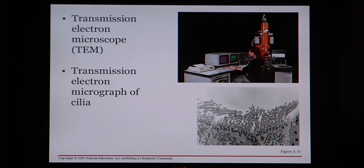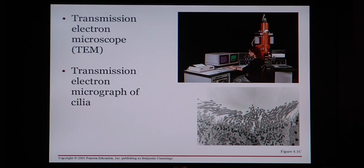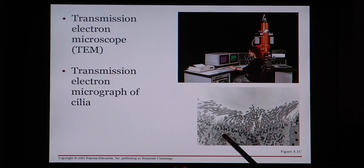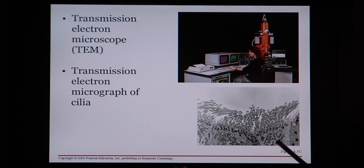Transmission electron microscopes are a little different. These are great at looking at the details of the internal cell structure — we can see inside the cells and see the organelles that make up the cell. Looking at the same cells through a transmission electron microscope, we can actually see all the organelles inside, giving us the details of the internal structure.